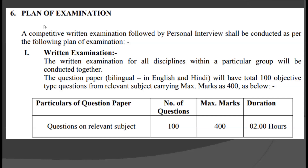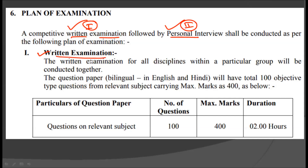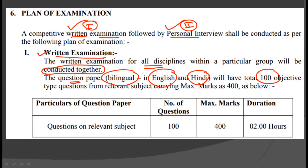Let us see the plan of the examination. This examination is going to occur in two stages: first is the written examination, which is followed by the personal interview. The written examination is conducted together for all disciplines. The question paper will be bilingual, that is, the questions will be set both in English as well as in Hindi. There will be total 100 questions of objective type with a maximum of 400 marks, meaning each question will have four marks. Two hours of time will be given for this particular written examination.